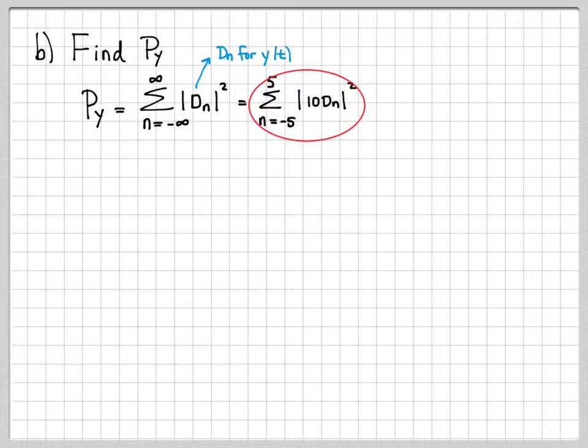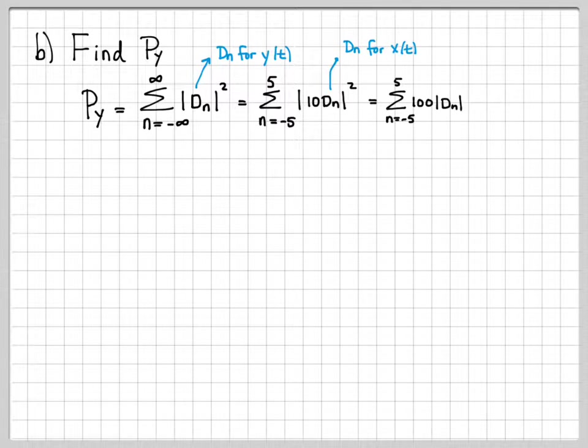We just figured out that it really just consists of these 11 terms. And the coefficients for y are 10 times the coefficients for x. So these were our original d n's for x. Getting multiplied by 10 turns them into the coefficients for y. So what that looked like was this. We can factor out the 10 squared. That's 100. And this is really a sum of 100 times the magnitude squared of d n's, where these d n's are the d n's of x of t, because that's how they got manipulated when going through the system.